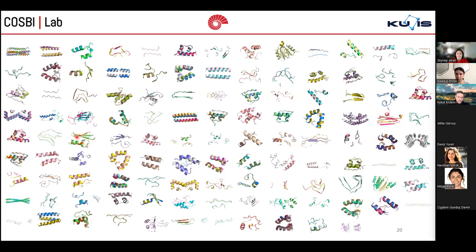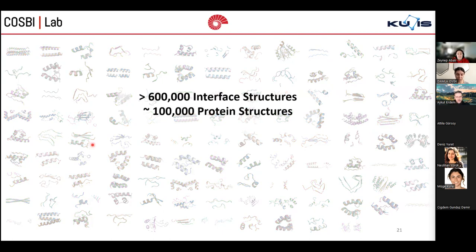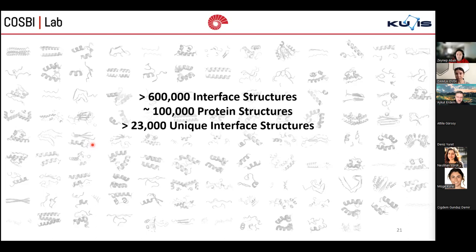Protein interfaces come in different sizes and different shapes. Here you can see some of them, like pointed out here, but this is only like 30 of them from thousands of available structures. Right now, we have more than 600,000 interface structures coming from 100,000 protein structures in our dataset. And it is expected that around 23,000 of them are unique. Several studies show that structures of interface regions are well protected throughout evolution. So even though there are many possibilities to form different interface regions coming from different proteins, only a fraction of it is observed in nature. Here, I would like to stop and let Damla continue for the rest of the presentation. But before that, I would like to answer your questions related to this part.